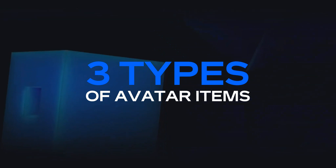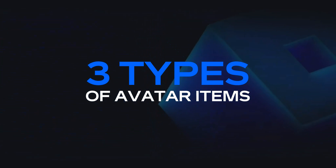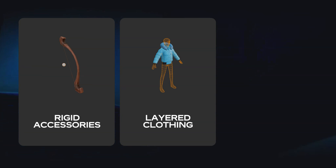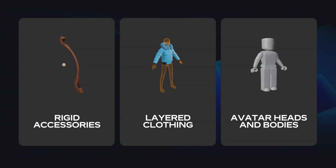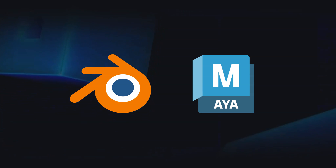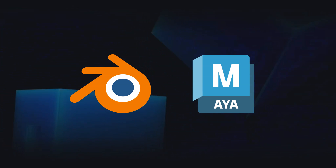You can currently upload three different types of avatar items: rigid accessories, layered clothing, and avatar bodies and heads. To get started with creating an avatar item, creators must first open a third-party software like Blender or Maya and start the modeling process.